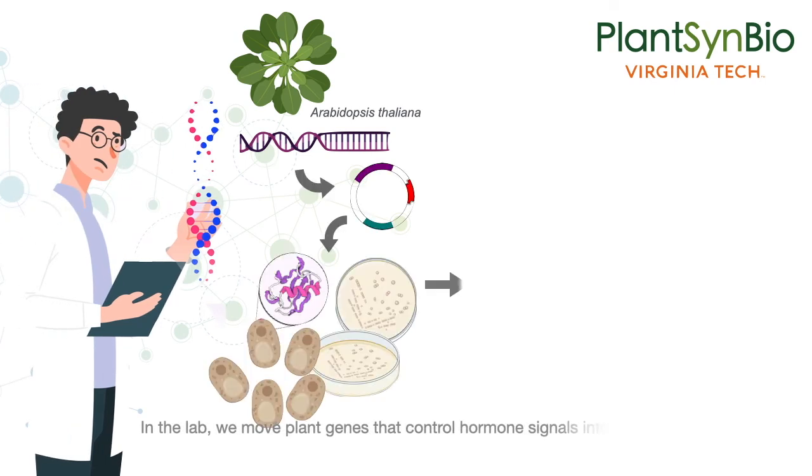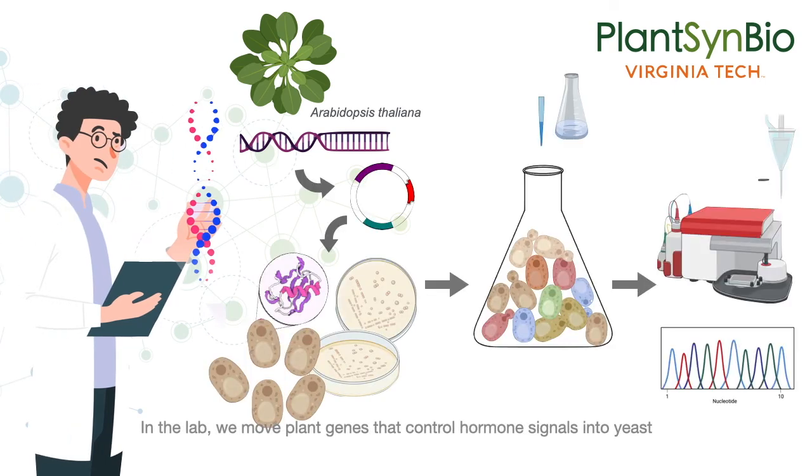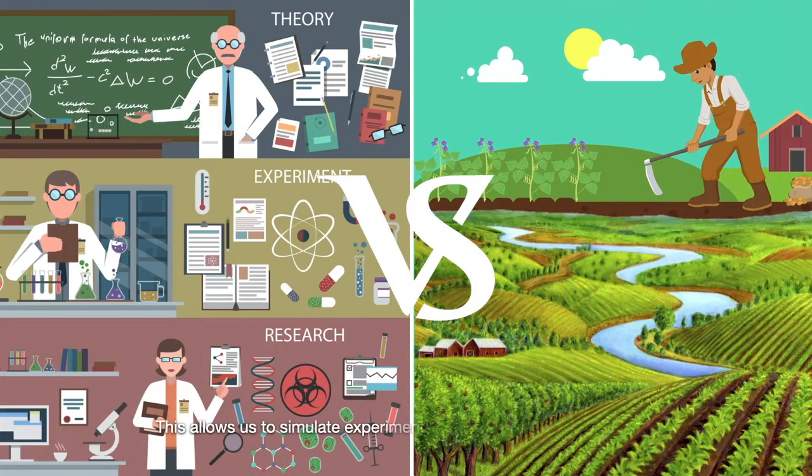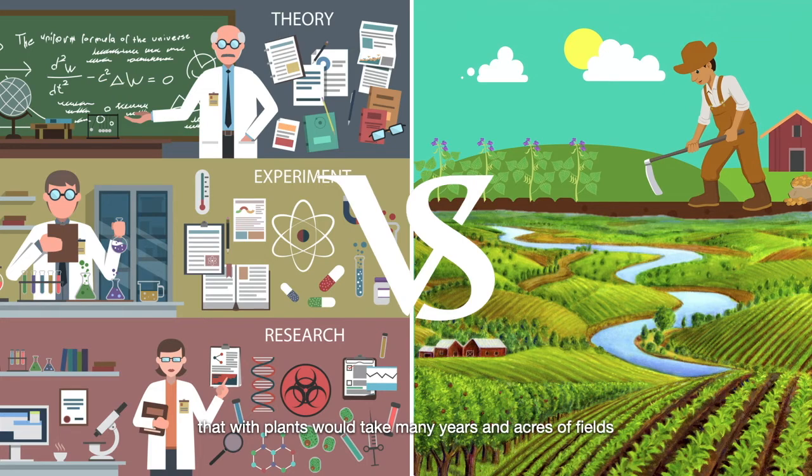In the lab, we move plant genes that control hormone signals into yeast, which grow a thousand times faster than plants do. This allows us to simulate experiments in a test tube in a few weeks that with plants would take many years and acres of fields.